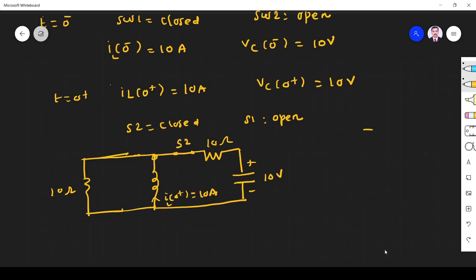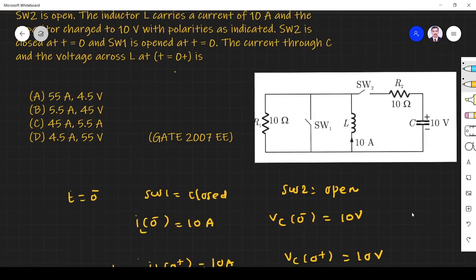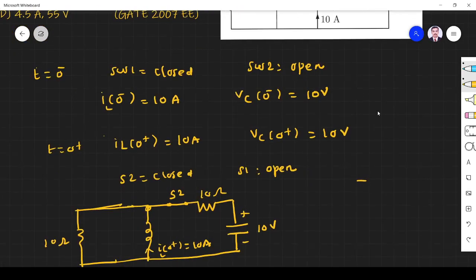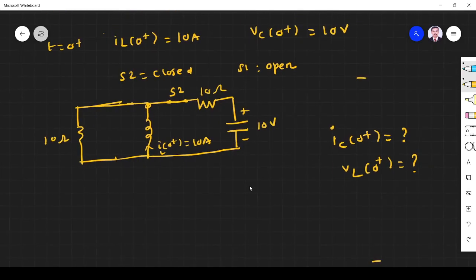Now what we have to find: the question is asking for the current through the capacitor and voltage across inductor. So I have to find I_C(0+) and V_L(0+) at T equals 0 plus. Now what I do is I apply nodal analysis, and this is KVL, KCL. So let me take voltage at this point as V_L.